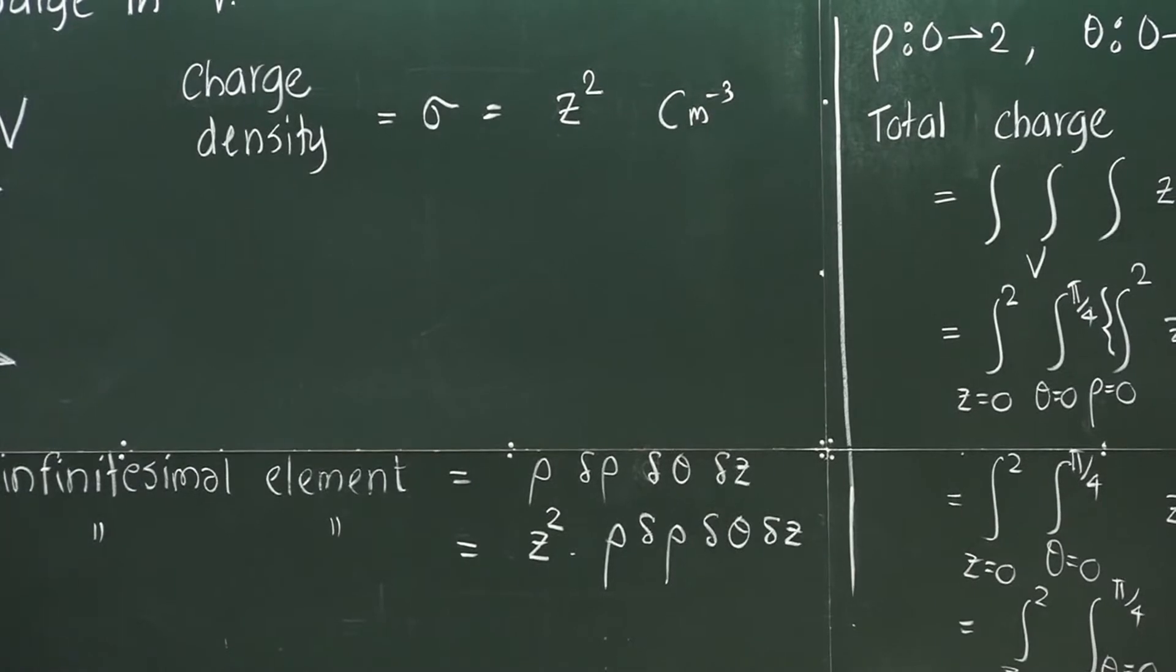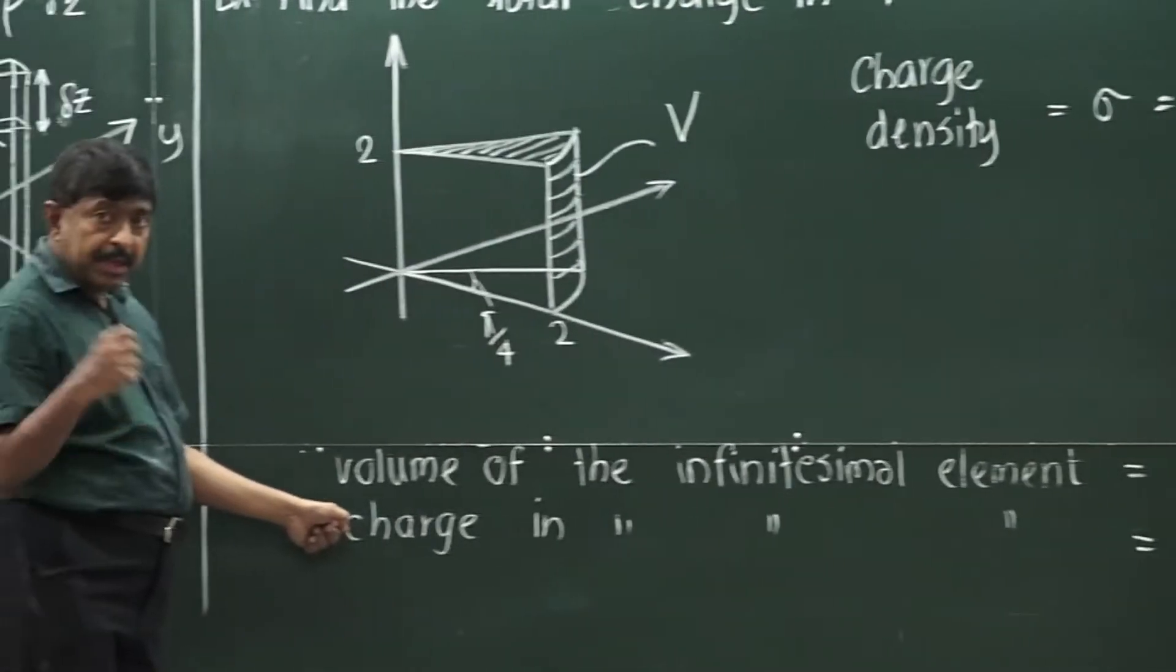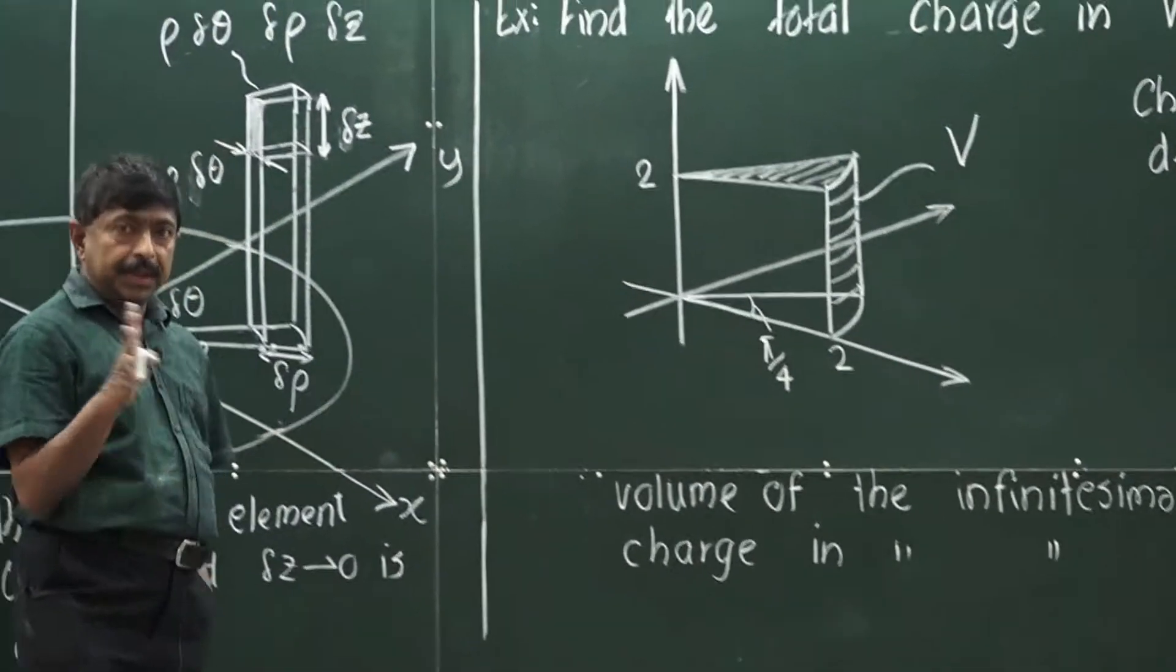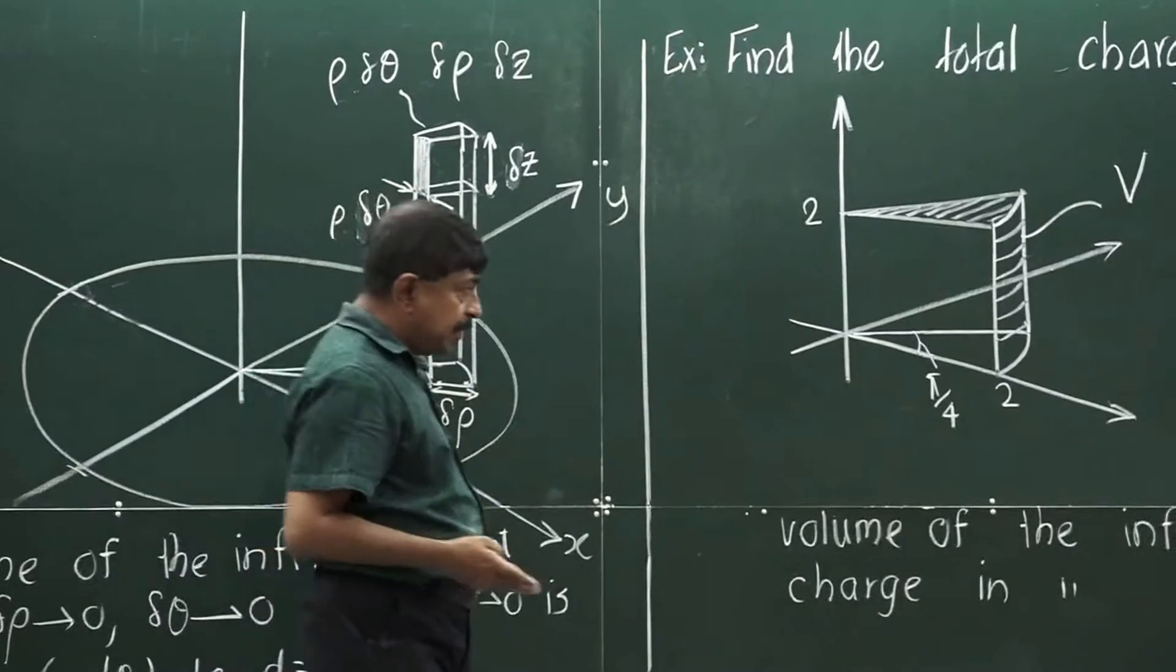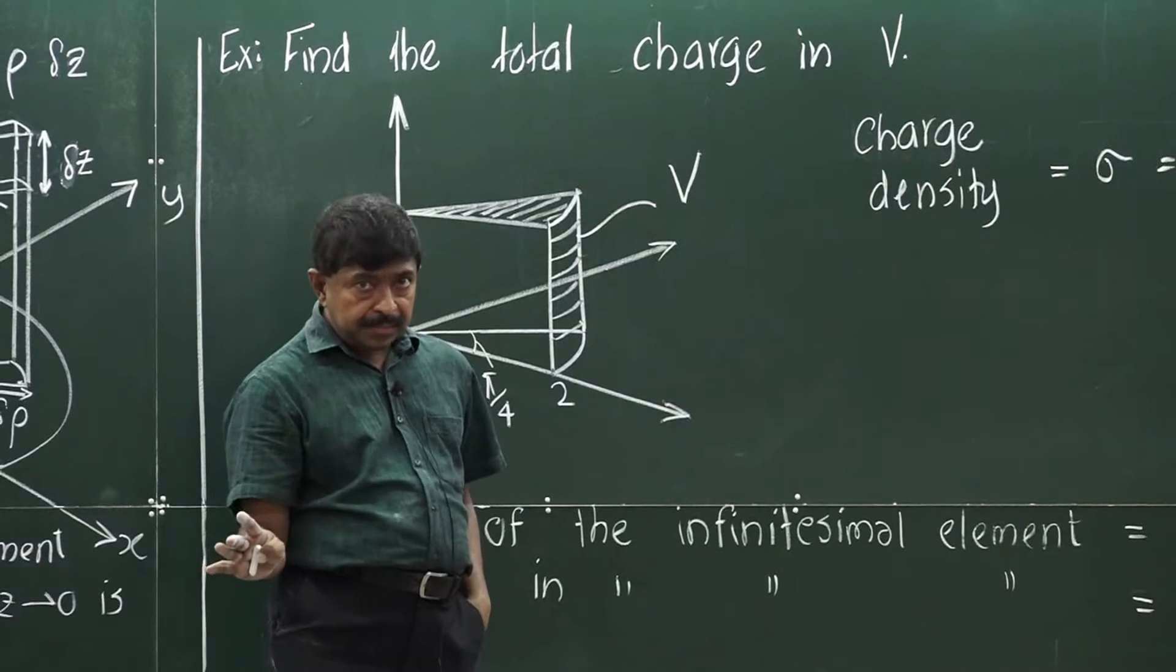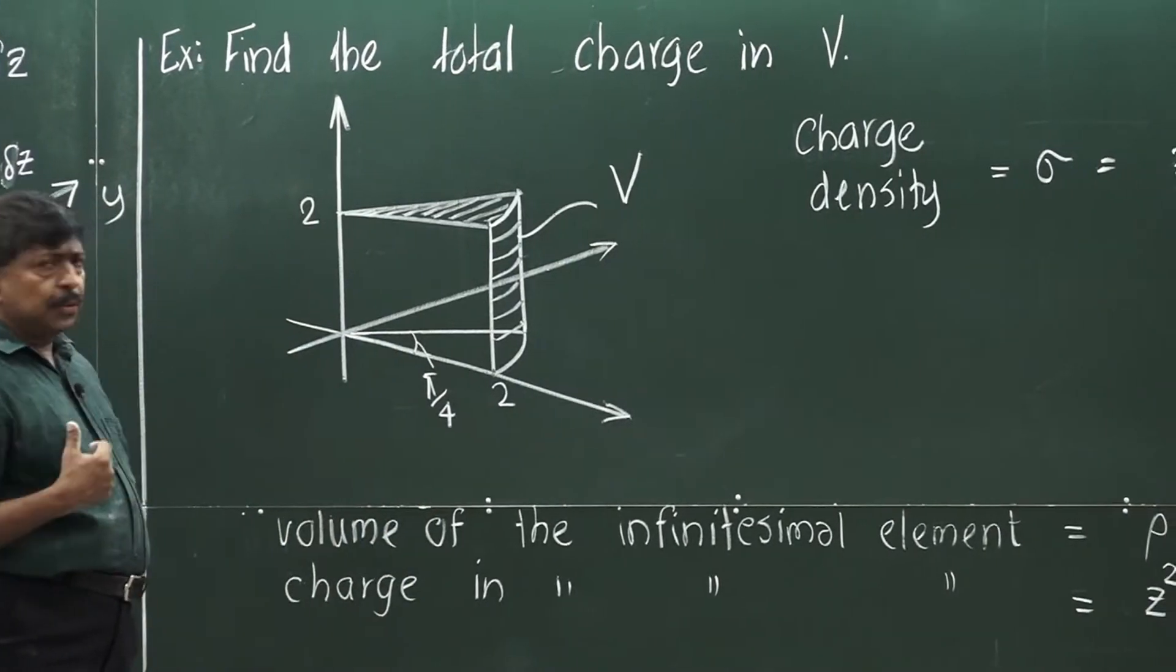Even though we know the charge in the infinitesimal element, to find the total charge we need to integrate. Since there are three variables, it should be definitely a triple integral. And at the same time, we need to figure out the limits.